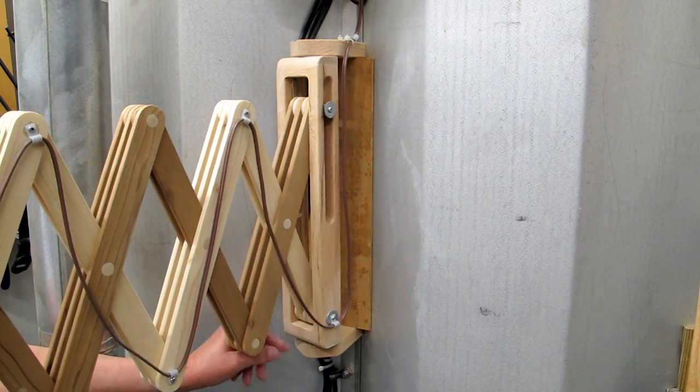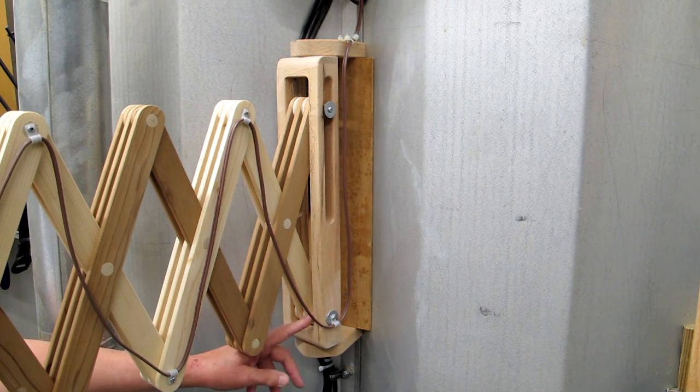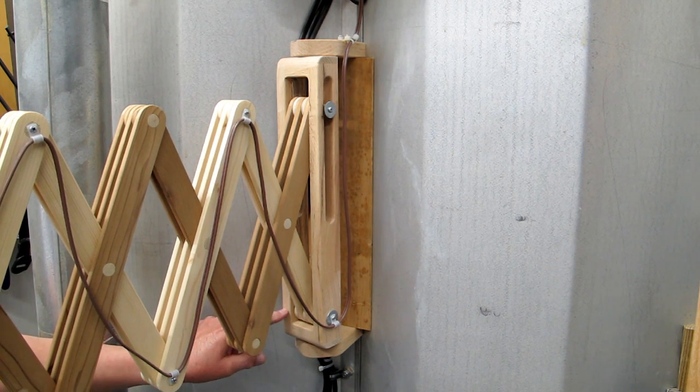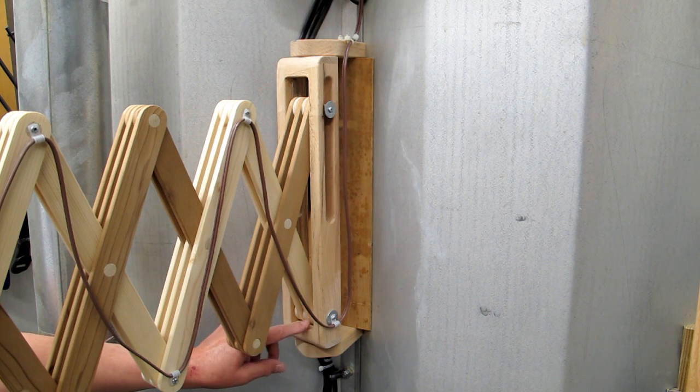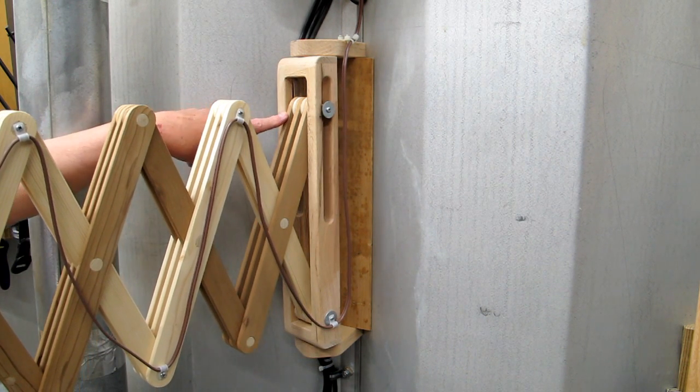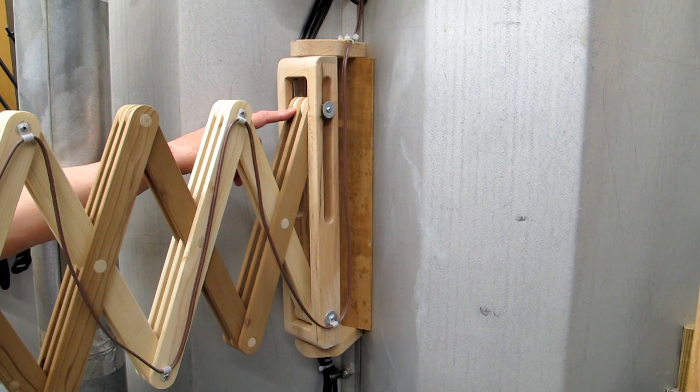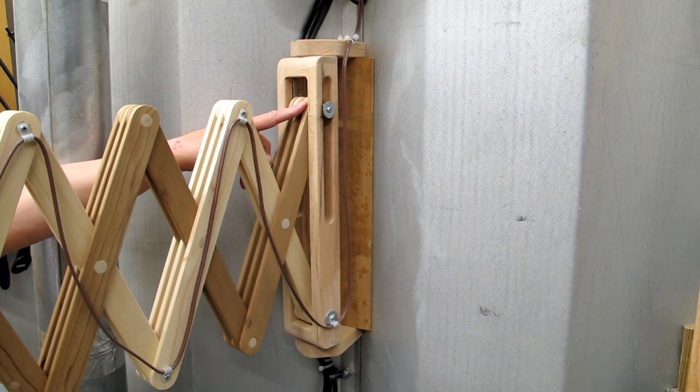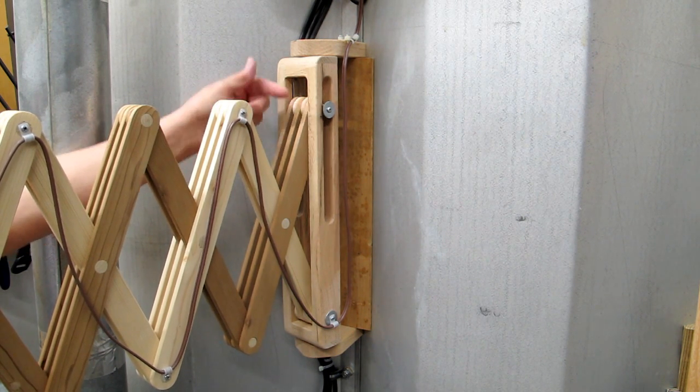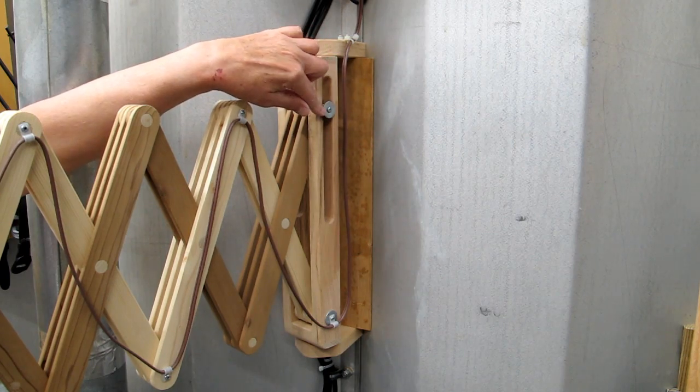Here you have some spacer washers that are made out of wood and there's a wood doll that runs through that. Again, fender washers to keep them in place. The same thing up here at the top, some spacer washers, a wooden doll, and these fender washers just keep everything in the center of this bracket.